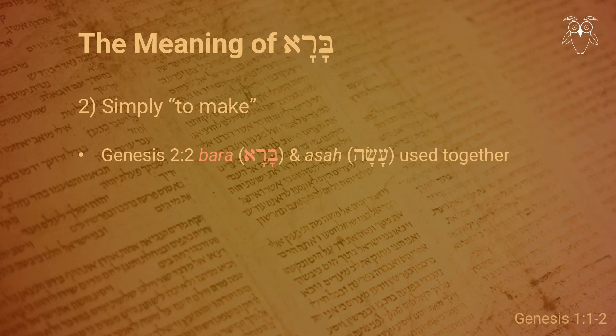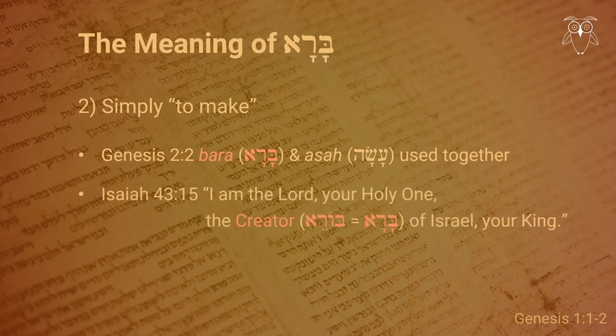Another argument against the idea that bara intrinsically means 'to create out of nothing' is how the word is used in places like Isaiah 43 verse 15, which reads, 'I am the Lord, your Holy One, the Creator of Israel, your King.' The word 'Creator' is a participle form of the verb bara, and from the historical context we know that God did not create Israel out of nothing, but from the offspring of Abraham, Isaac, Jacob, and their wives, meaning that even if no pre-existing material is mentioned, that does not mean it is absent.